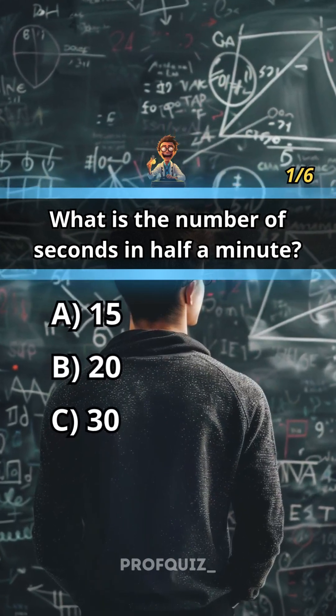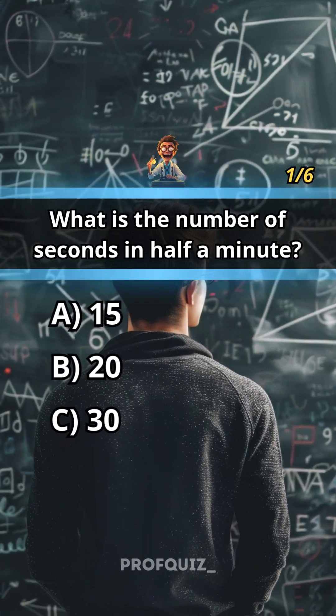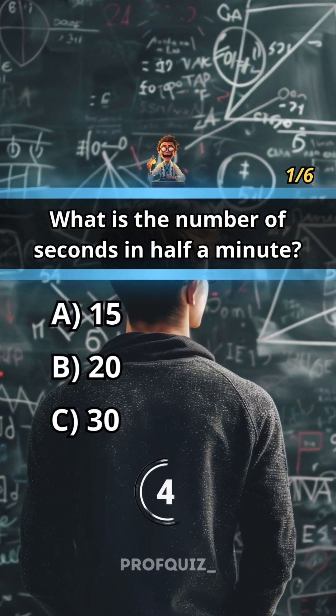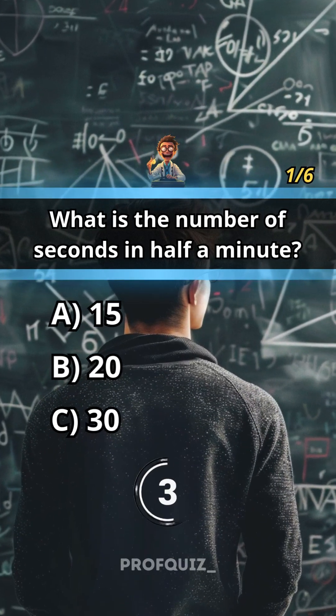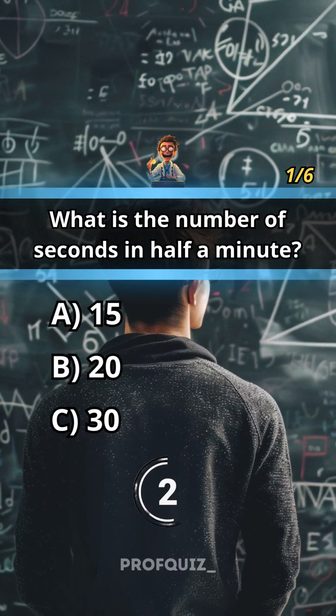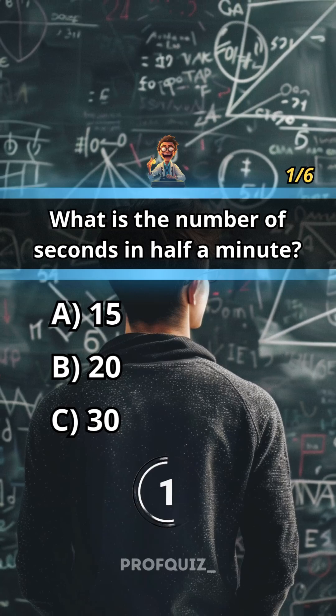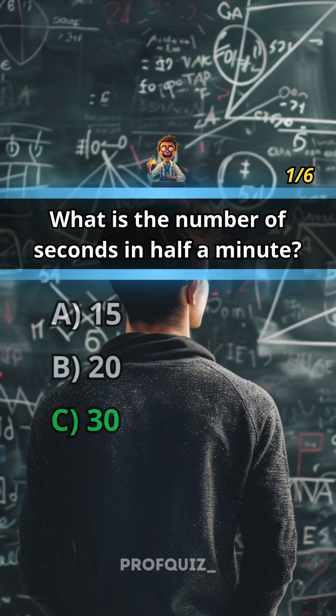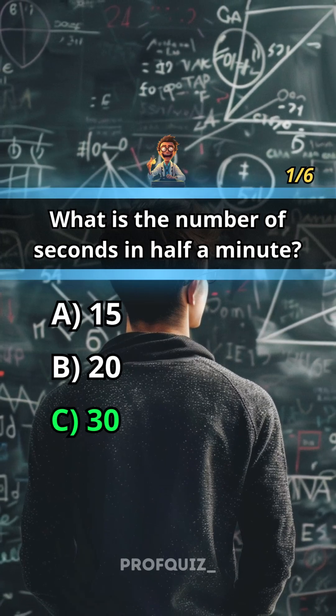What is the number of seconds in half a minute? Answer: C, 30.